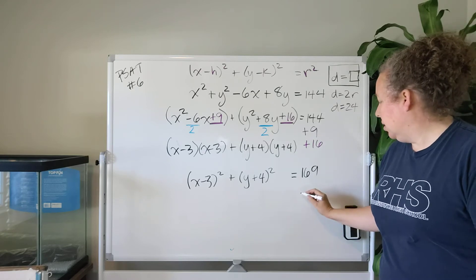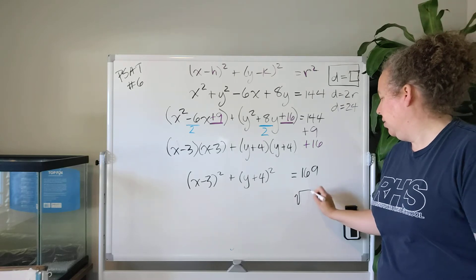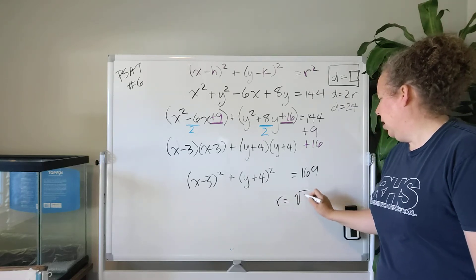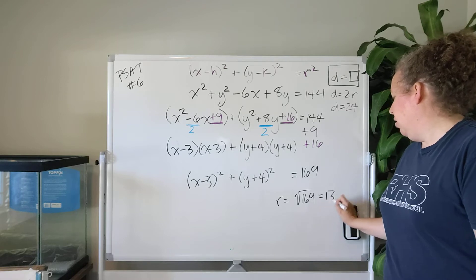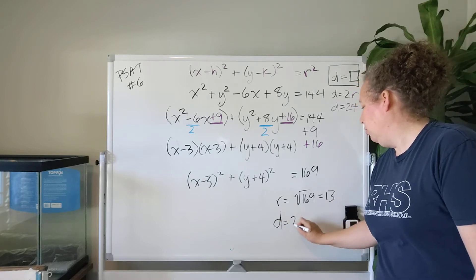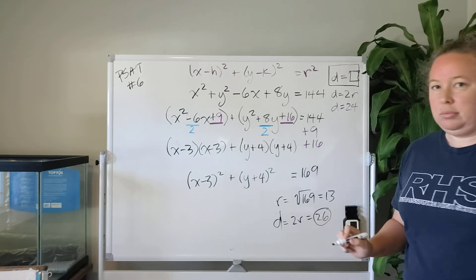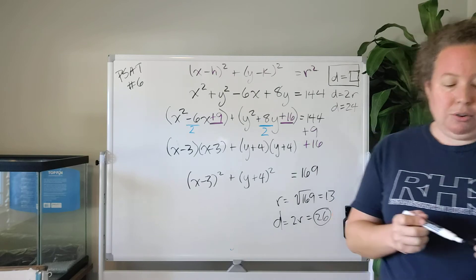And so we can see here the square root of 169 is 13. So r is going to be equal to the square root of 169, which is 13. And the diameter, which is 2r, is going to be 26. So this is actually the correct answer.